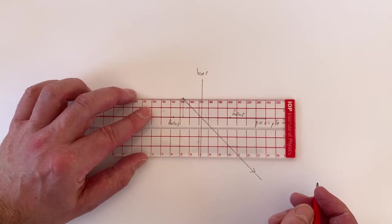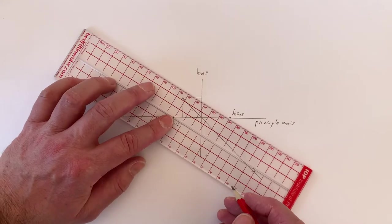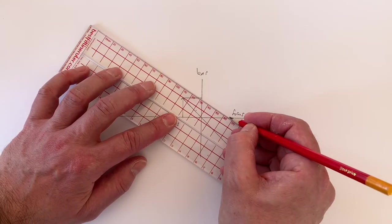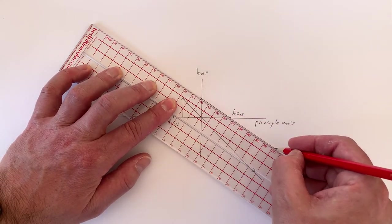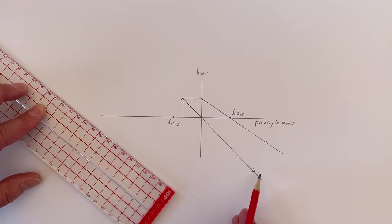Whereas light that travels parallel to the principal axis and hits the lens is going to go through the lens in such a way that it travels through the focus on the right-hand side of the lens. Now, these two lines reveal an immediate problem.